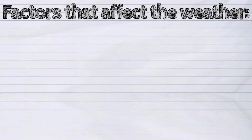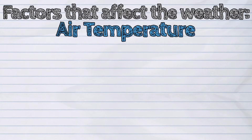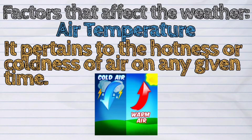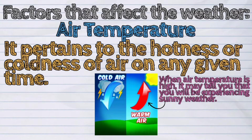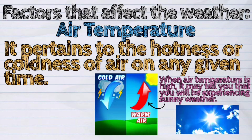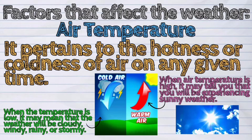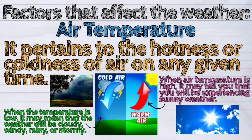There are factors that affect the weather. The first one is the air temperature. It pertains to the hotness or coldness of air at any given time. When air temperature is high, it may tell you that you will be experiencing sunny weather. When the temperature is low, it may mean that the weather will be cloudy, windy, rainy, or stormy.